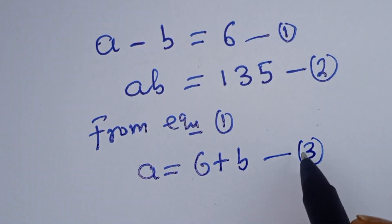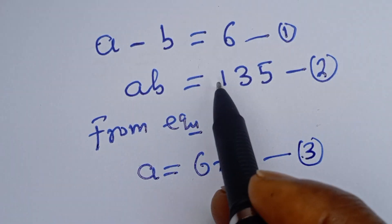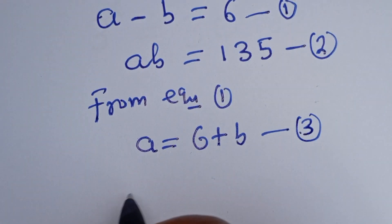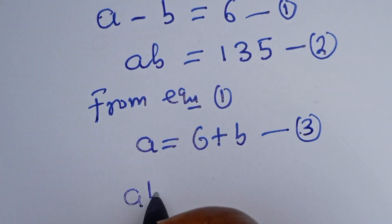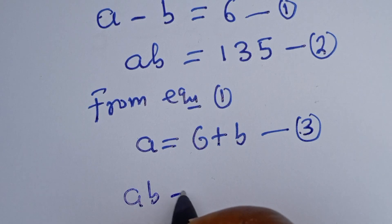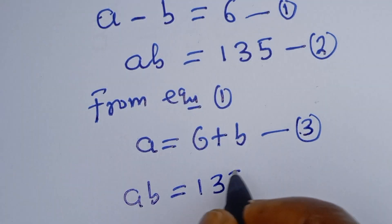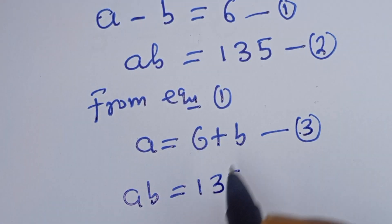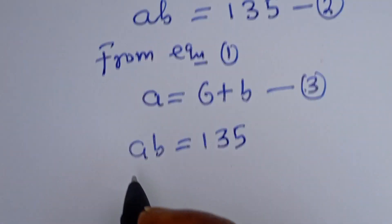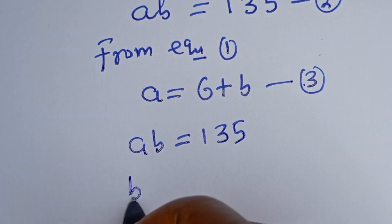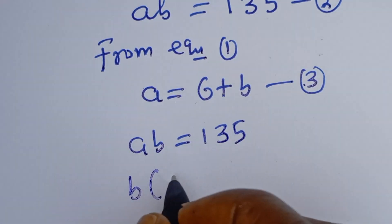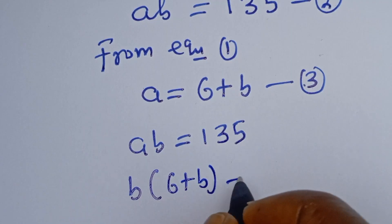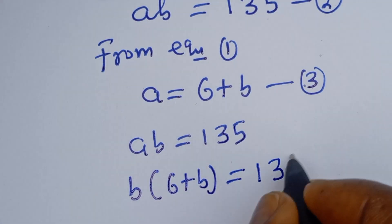We can now substitute equation 3 into equation 2. That is, we have AB is equal to 135. When A is equal to 6 plus B, this becomes B bracket (6 plus B) is equal to 135.